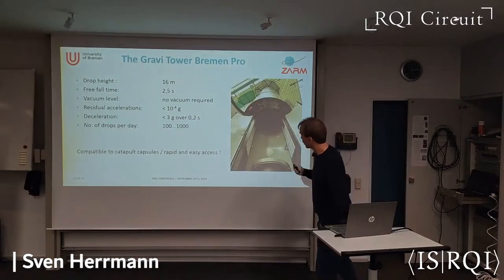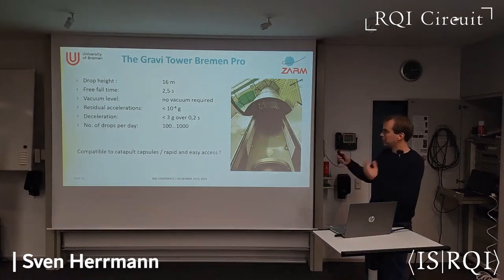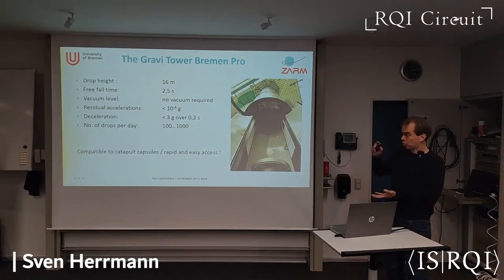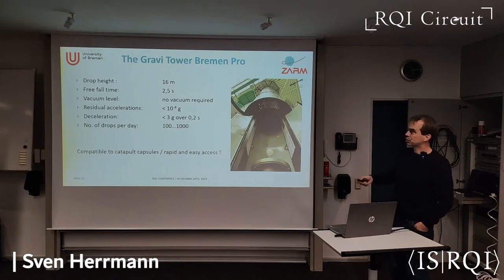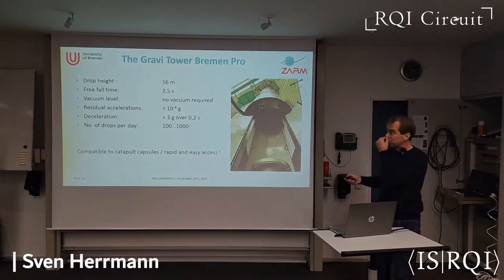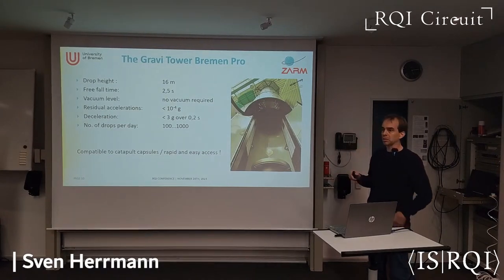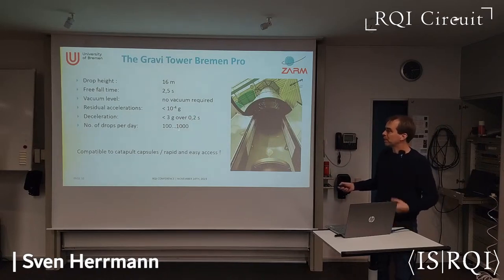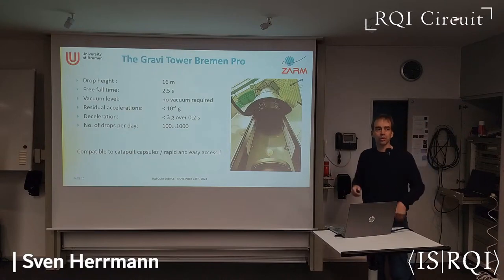To improve on that, we have a smaller facility — essentially an elevator system that moves actively up and down. Inside you place the same experiment in the drop capsule as a free-flyer. It's limited to 16 meters, giving us 2.5 seconds. This is very useful for parameter searches for our interferometers. Since we don't have to evacuate and wait 90 minutes, we can do many hundreds of repetitions per day. Once we've established the right parameter set, we move to the tower for longer interferometry times.